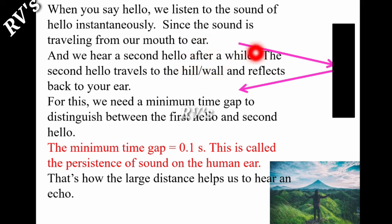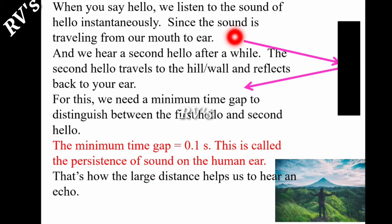The minimum time gap is 0.1 seconds. This is called the persistence of sound on the human ear. That's how large distances help us to hear echoes clearly. Large distances make echoes clear. There is a minimum distance from observer to the obstacles for us to be able to listen to echoes.